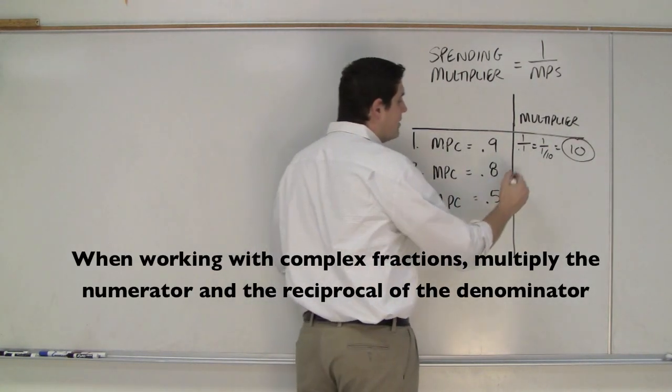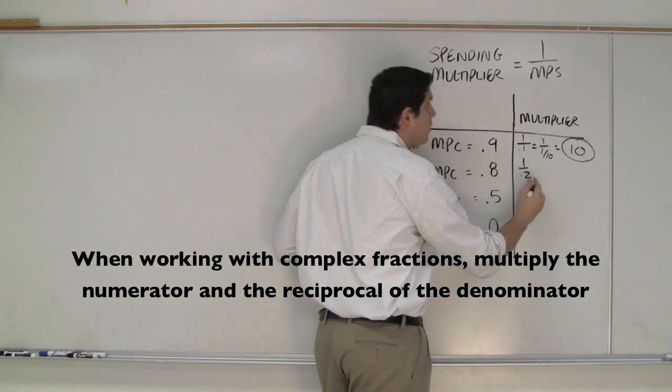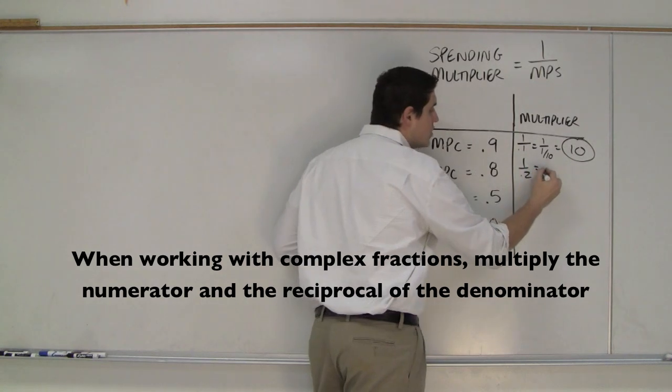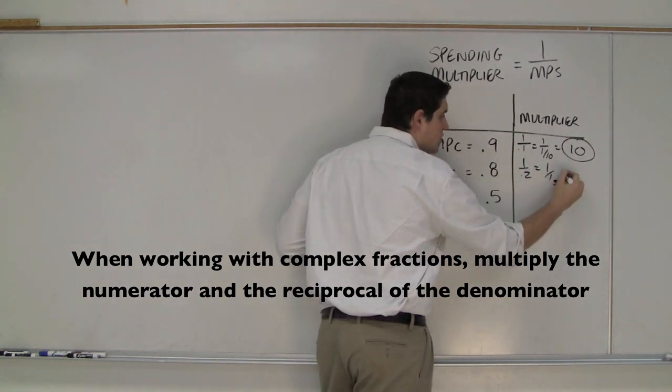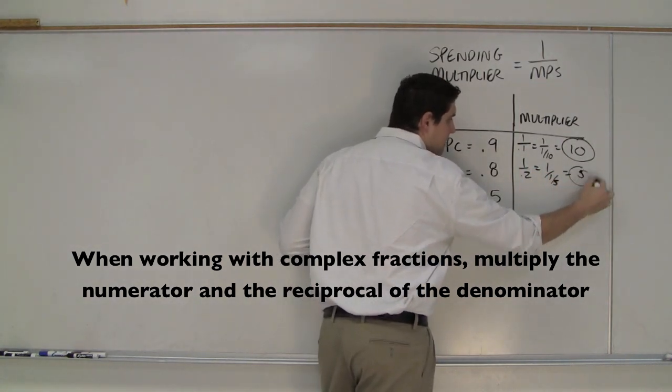For a marginal propensity to consume of 0.8, it's 1 over 0.2, because that's the marginal propensity to save, which is 1 over 1 fifth, which is equal to 5.